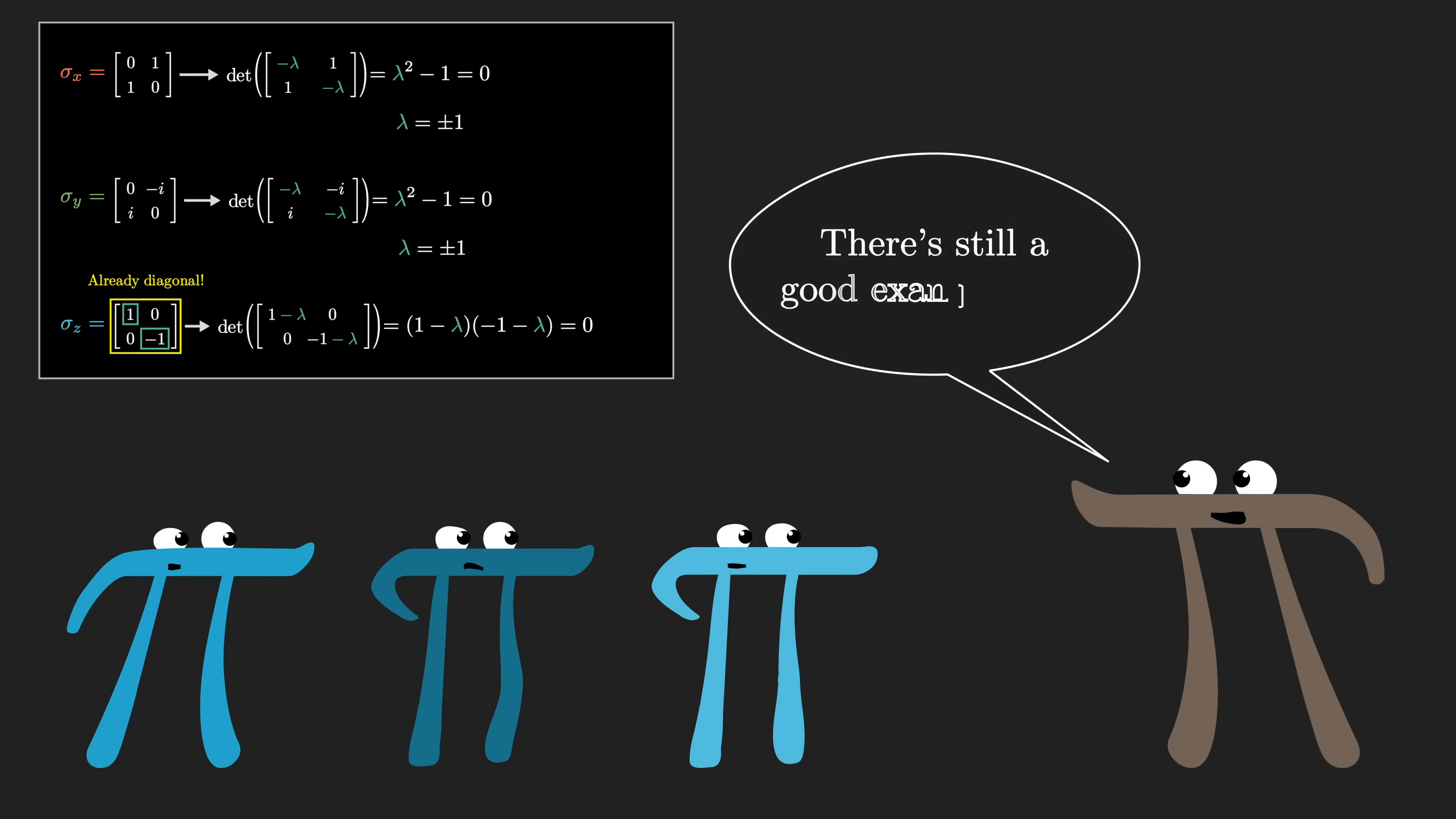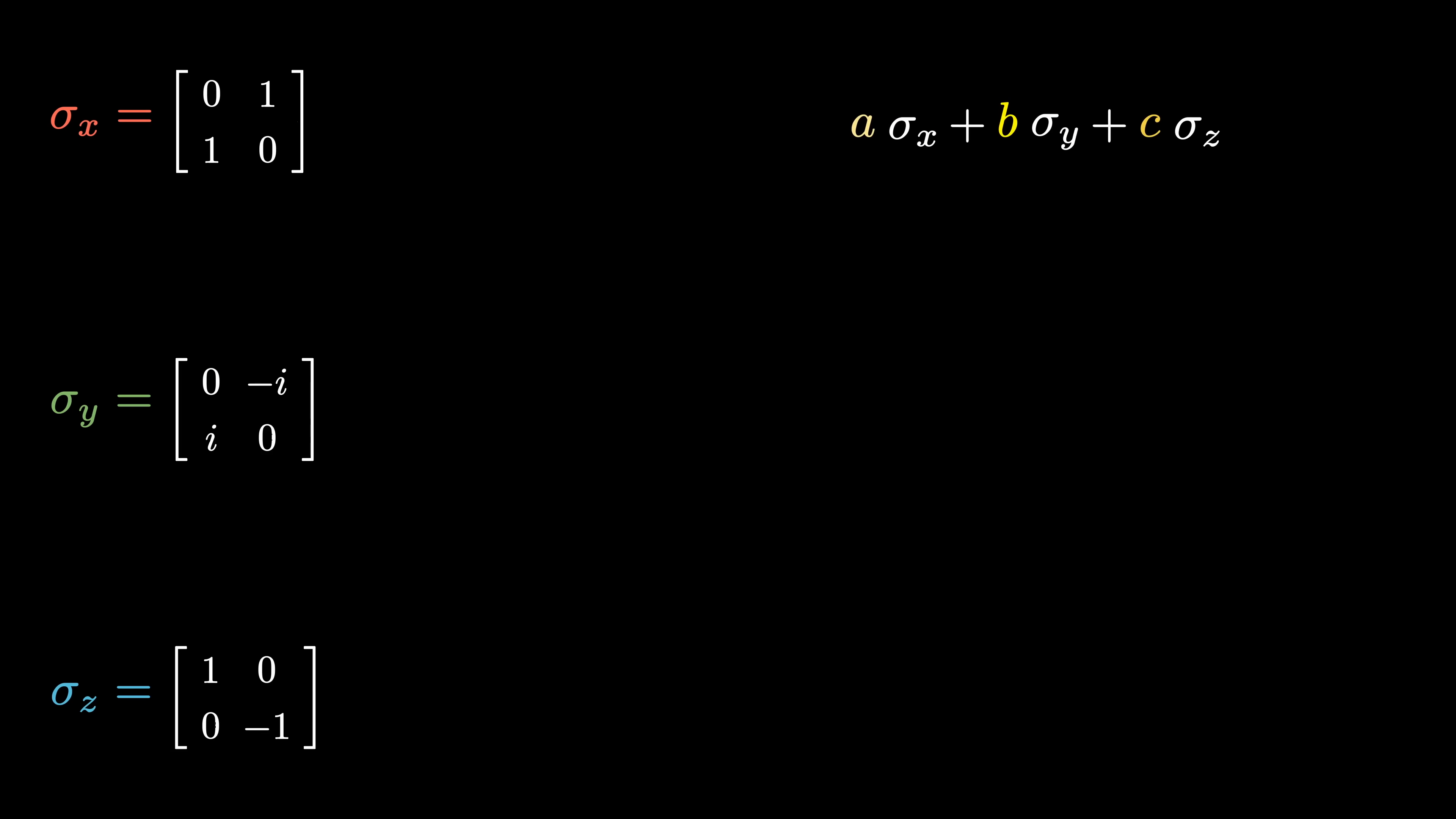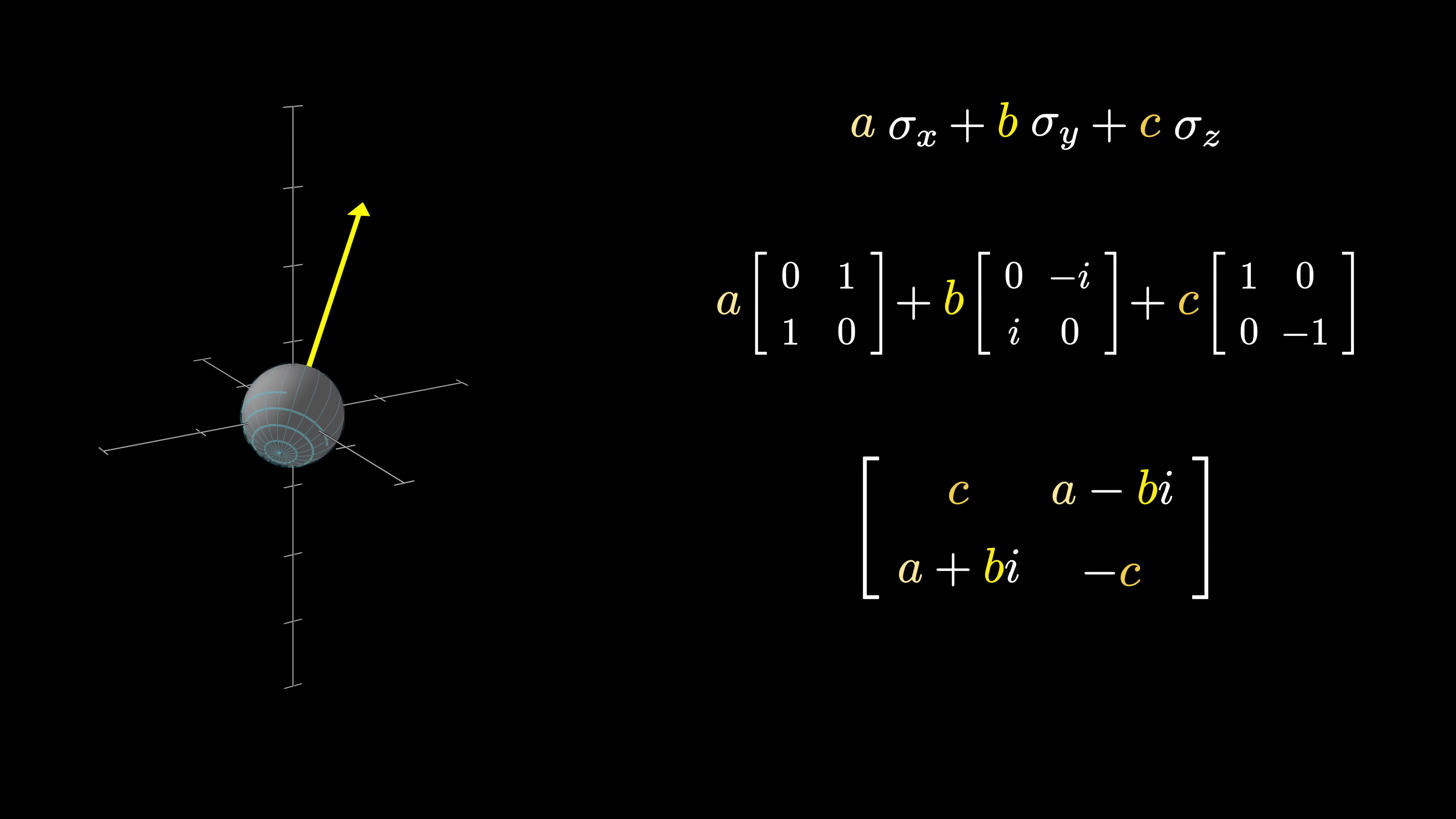However, the example is not totally lost to our cause. Where you will actually feel the speed up is in the more general case, where you take a linear combination of these three matrices and then try to compute the eigenvalues. You might write this as a times the first one plus b times the second plus c times the third. In quantum mechanics, this would describe spin observations in a general direction of a vector with coordinates a, b, c. More specifically, you should assume that this vector is normalized, meaning a squared plus b squared plus c squared is equal to one.